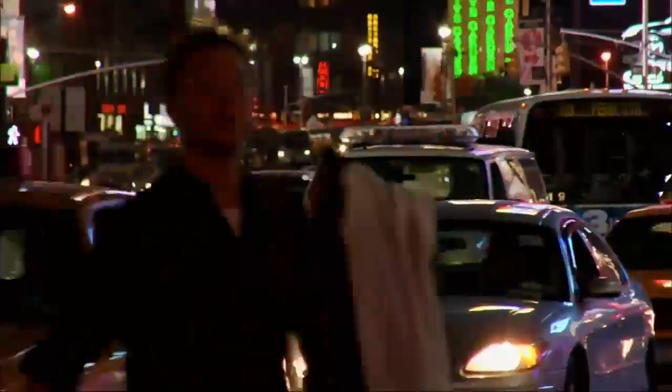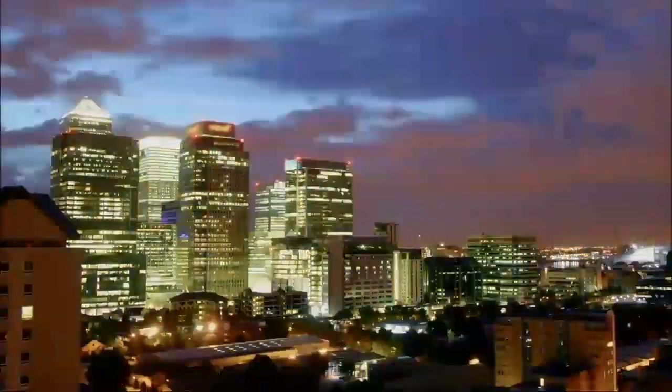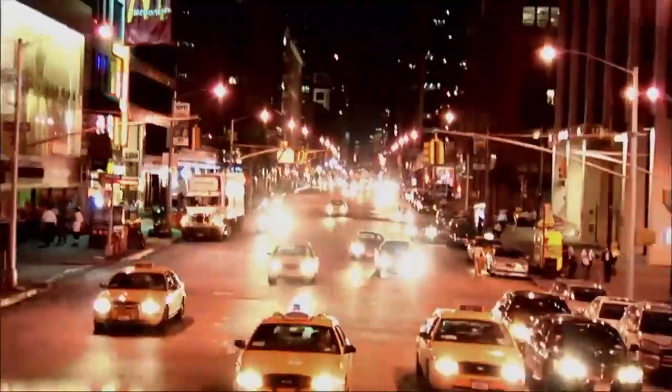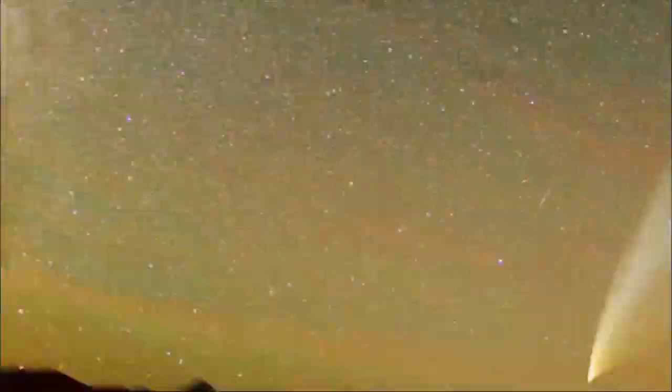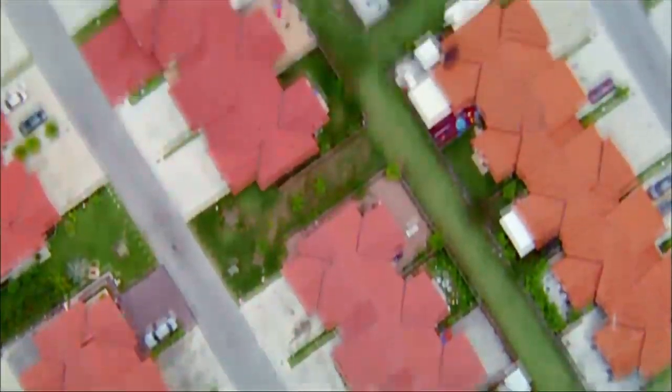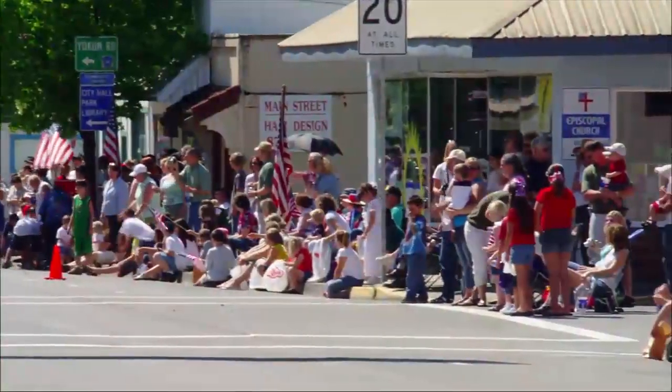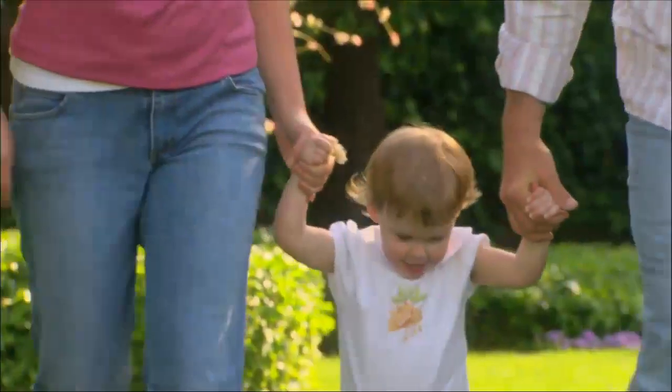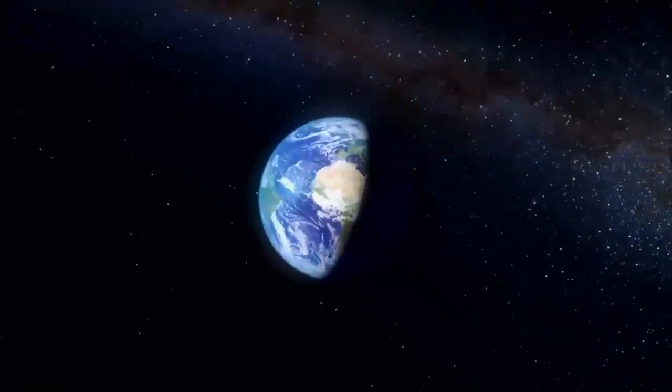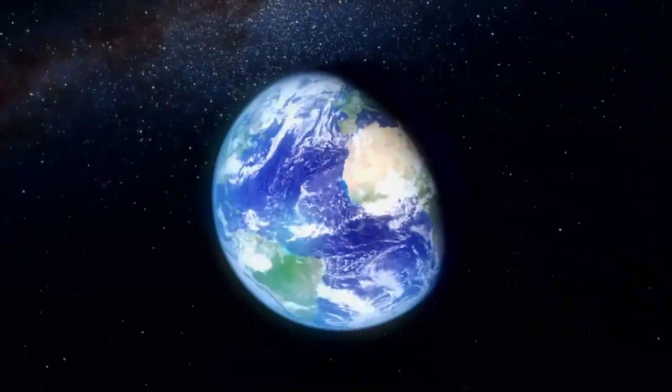You can make the analogy of the Milky Way as being very much like a city. There's a central region. There's big buildings. There's a lot of action in the middle. And that's certainly true of our galaxy. Then you move out to the suburbs where life is a little bit more comfortable, a little more relaxing. It's a better place to raise a family. This is where we reside.